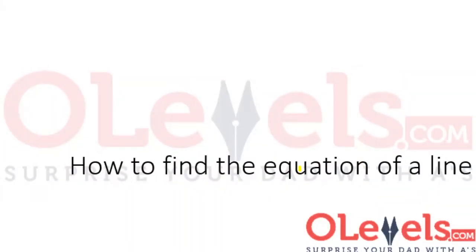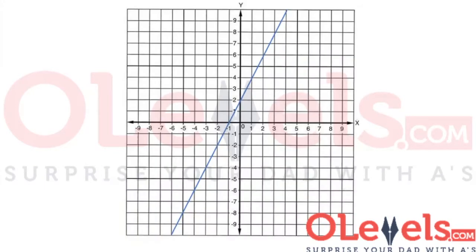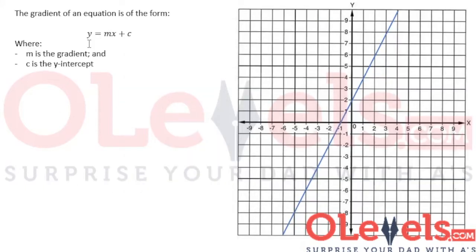How to find the equation of a line. Given this line, how would we find or determine the equation? The equation of a straight line has the form y is equal to mx plus c, where m is the gradient and c is the y-intercept.